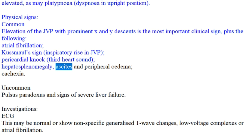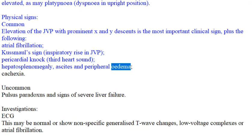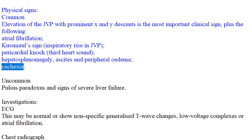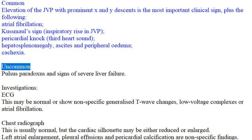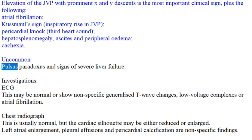Hepatosplenomegaly, ascites, peripheral edema, and cachexia are common findings. Uncommon: Pulsus paradoxus and signs of severe liver failure.